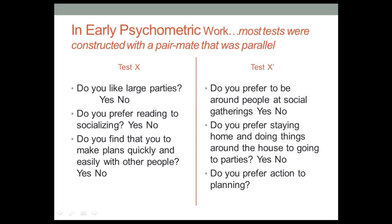So I've got an extroversion item number one and an introversion item number two in both tests. Item three on the original test: 'Do you find that you prefer to make plans quickly and easily with other people?' — yes or no. That's kind of an impulsiveness question; if you like to make plans quickly, you're more likely to be extroverted. I noticed my items were a little longer on the parallel test, so this time I try to write something shorter: 'Do you prefer action to planning for action?' There are my two tests, which I hope will be parallel. This is how you create tests that are intended to be parallel.